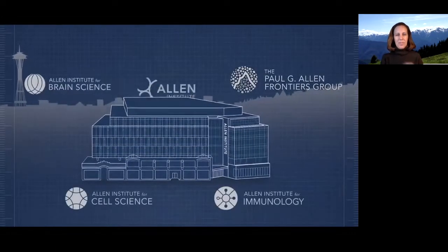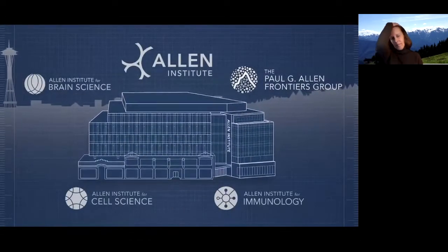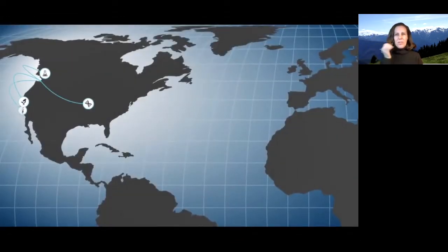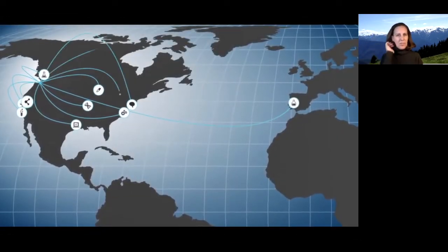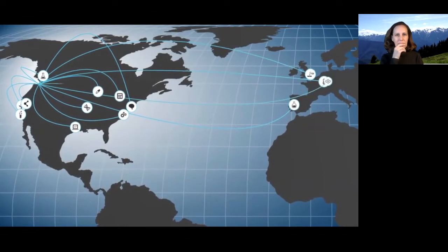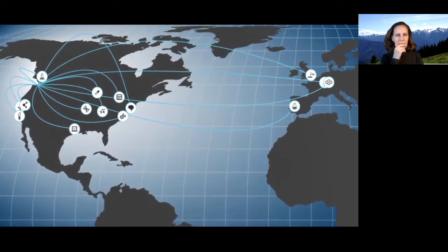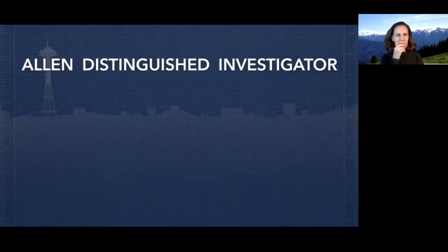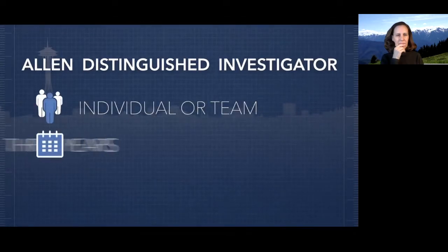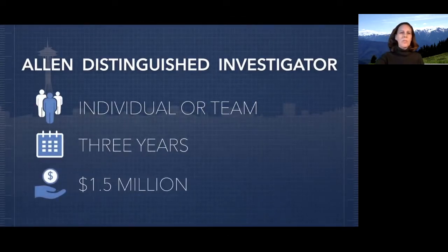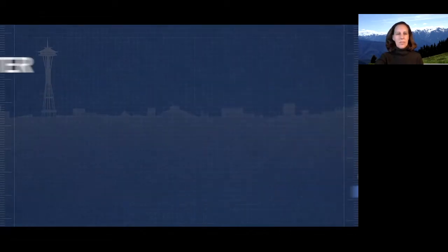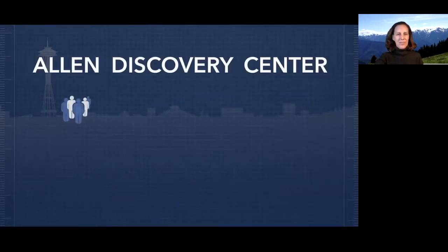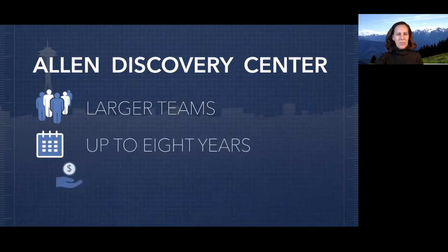The Frontiers Group is a division of the Allen Institute. Unlike our other colleagues, we look externally, we look outside of the institute to see where are the breakthroughs, where is the science that really needs that catalytic funding to push through. We have two primary mechanisms of support. One is the Allen Distinguished Investigator, and that's for an investigator or a team for over three years of funding at $1.5 million. Another mechanism is the Allen Discovery Center. These are larger teams and longer-term investments of up to eight years and $20 million.